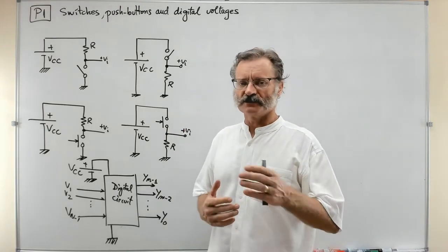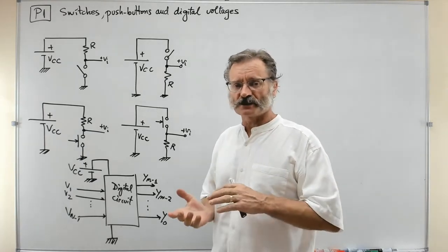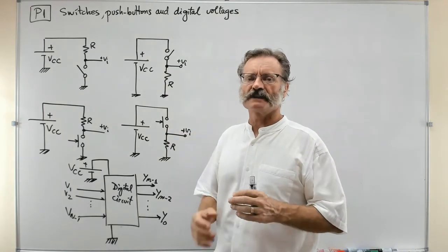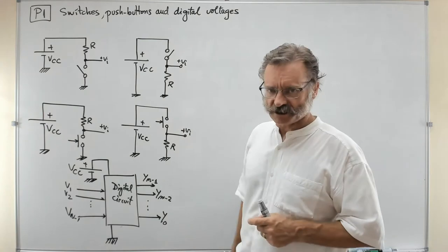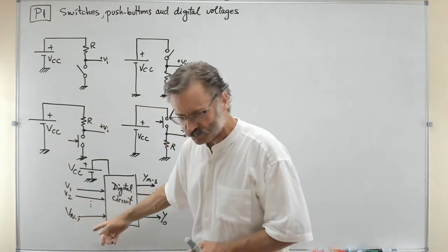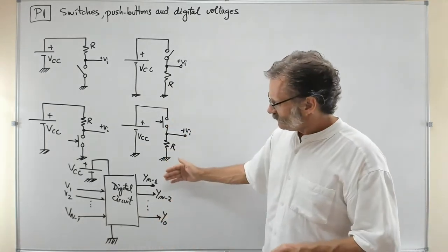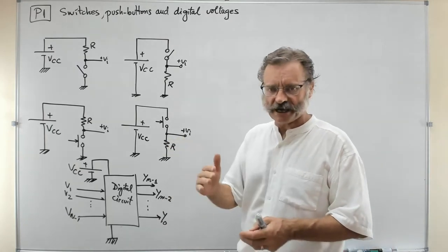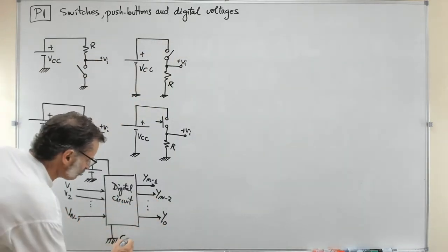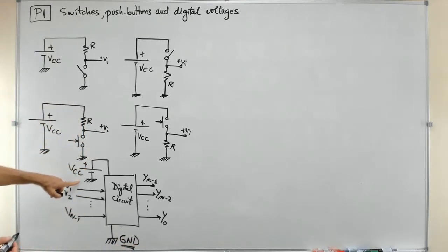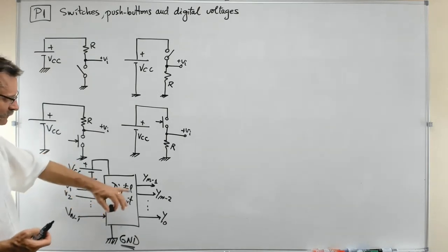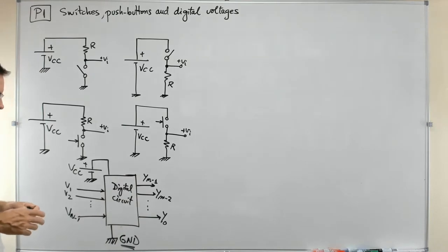To learn the basics about voltages and digital values — ones and zeros — we need to think about very simple circuits. We always have in mind a digital circuit with some inputs, for example B1, B2 up to BN-1, so N inputs, and outputs Y0, Y1 up to YM-1. This circuit must be connected to ground (GND) and to a power supply VCC, which might be 5 volts, 3.3 volts, or 24 volts, depending on the application.